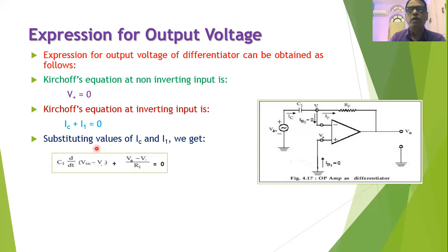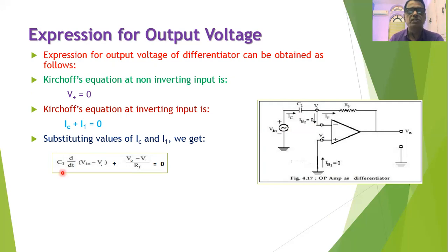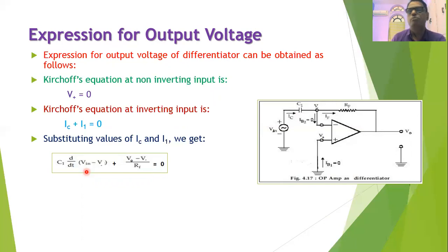Now we can substitute the values of IC and IF. The current flowing through the capacitor is given as the capacitance multiplied by d/dt of the voltage across the capacitor. The voltage across the capacitor is VIN minus V minus, so IC equals C1 times d/dt of (VIN minus V minus). The current flowing through resistance RF is given as (VO minus V minus) divided by RF.